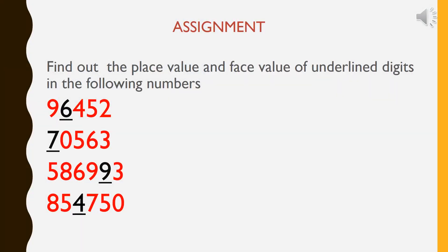Find out the place value and face value of the underlined digits given in this slide. The first number is 96,452, read as ninety-six thousand, four hundred fifty-two. In this number, 6 is underlined. The place value of 6 is six thousand, and the face value is 6. Similarly, find out the place value and face value of the underlined digits in the given numbers.